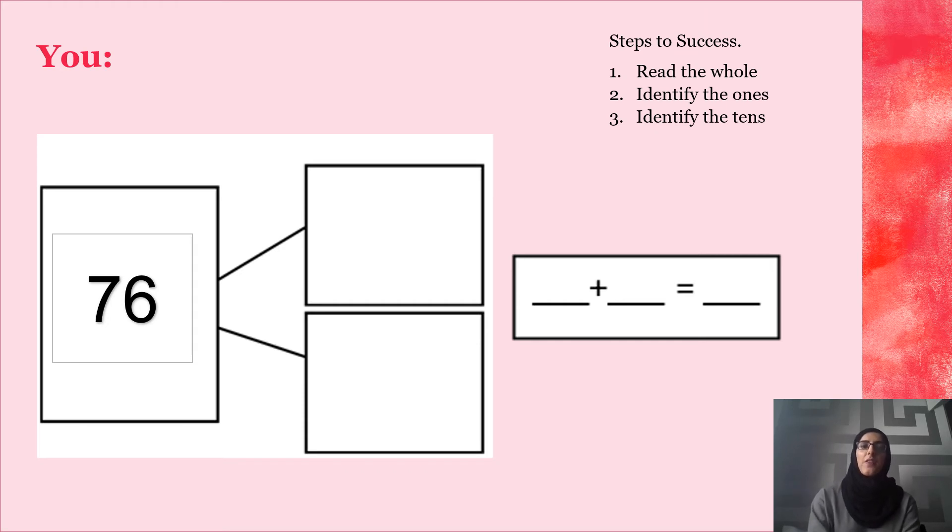Fantastic. There are 6 ones. There are 7 tens which make 70. Now, I'm going to put this number together. 70 add 6 which equals 76. Fantastic. Well done.